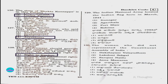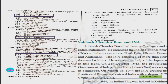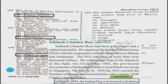Question number 129: The Indian National Army hoisted the national flag here in March 1944 — Itdhanagar, Agarthala, Port Blair, or Kohima? In the social textbook of class 8, it is clearly given that in March 1944, the Indian flag was hoisted in Kohima. So the answer is option four, Kohima.